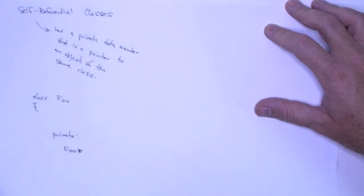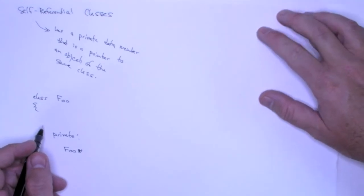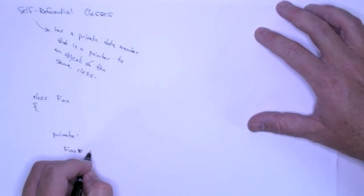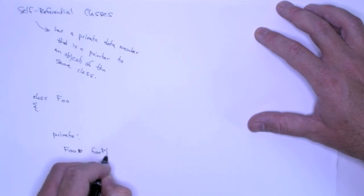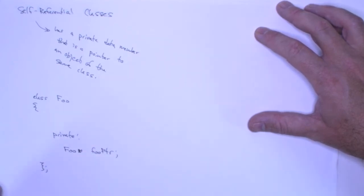And now I can call this pointer anything I want. I'll just, let's say, I call it foo pointer. And that's really all I need to make a self-referential class.